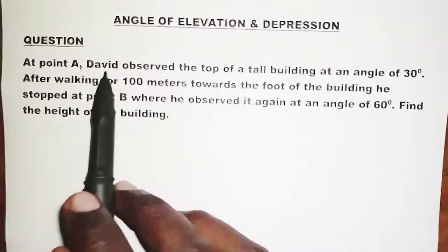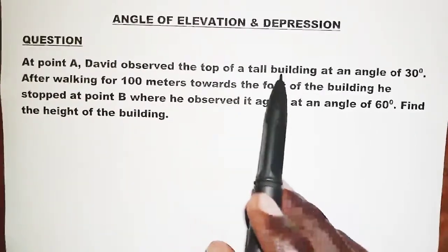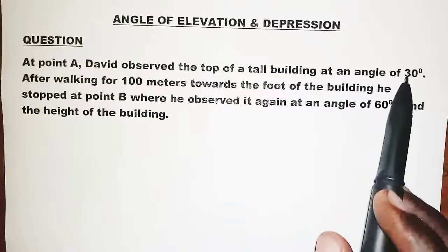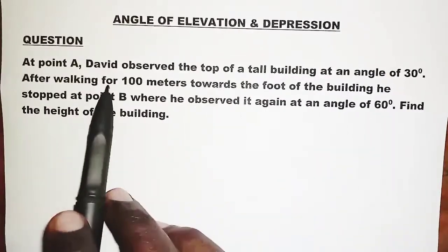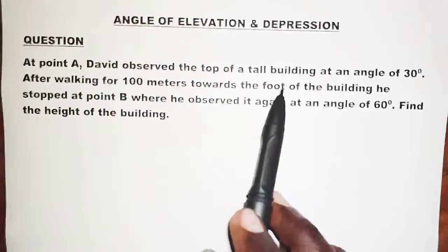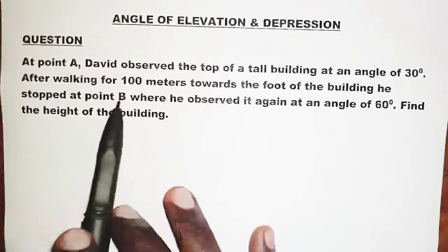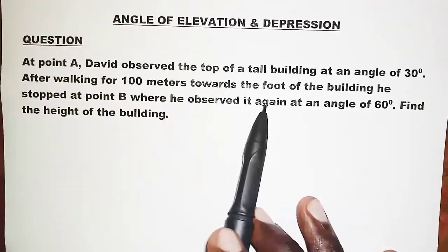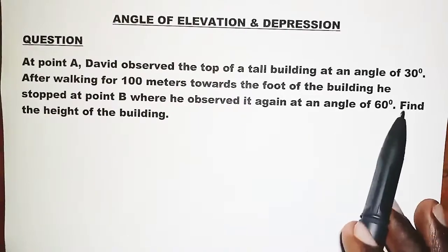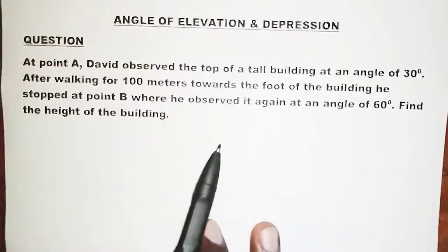At point A, David observed the top of a tall building at an angle of 30 degrees. After walking for 100 meters towards the foot of the building, he stopped at point B where he observed it again at an angle of 60 degrees. Find the height of the building.